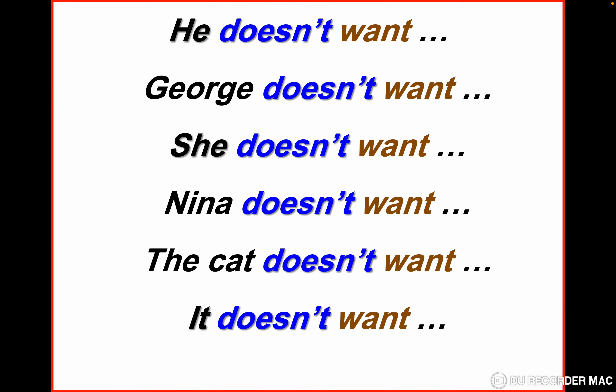Examples: he doesn't want, George doesn't want, she doesn't want, Nina doesn't want, the cat doesn't want, it doesn't want. We notice that the verb with he, George, she, Nina, and the cat does not have an 's' because it is with 'doesn't'. In the negative form, the verb remains in the infinitive without 's'.